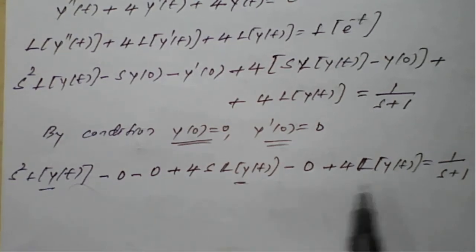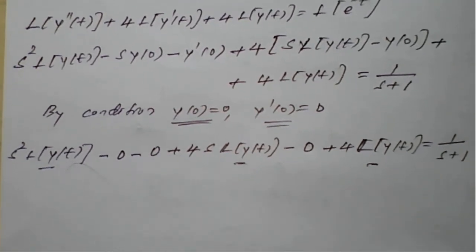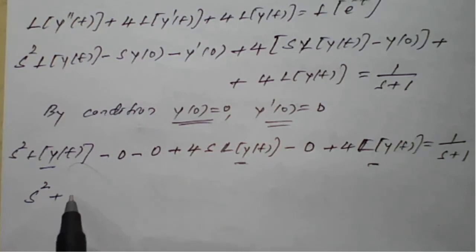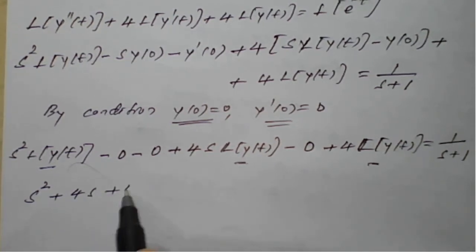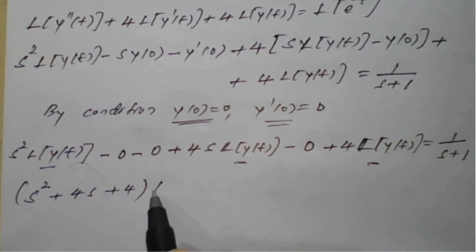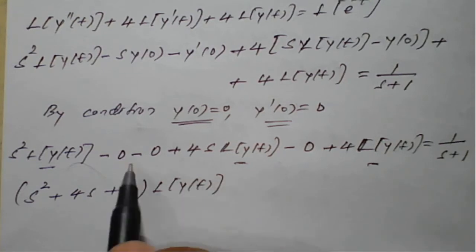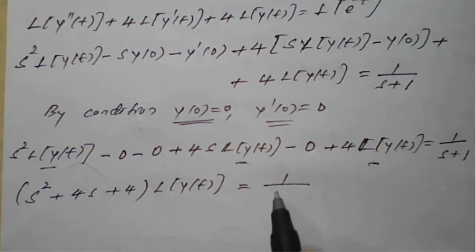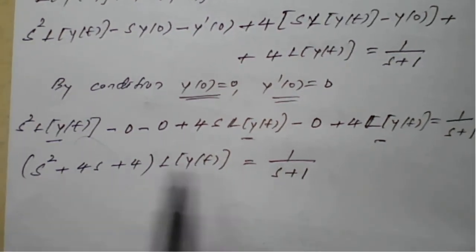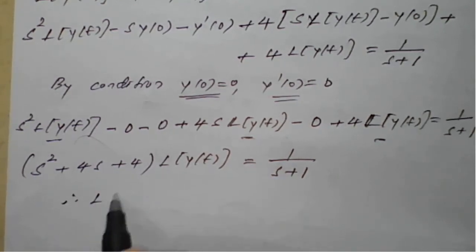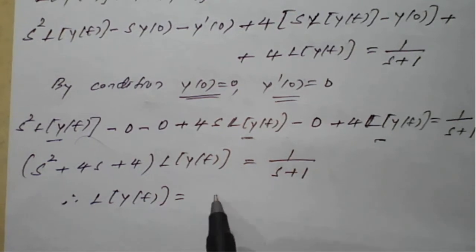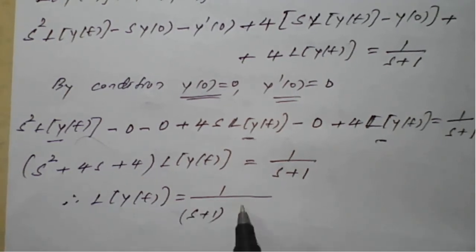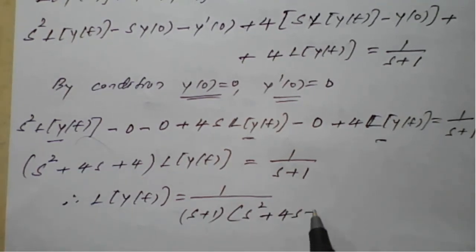Taking L{y(t)} as common, we collect coefficients: (s² + 4s + 4)·L{y(t)} = 1/(s+1). Shifting the bracket to the right-hand side, therefore L{y(t)} = 1/[(s+1)(s² + 4s + 4)].